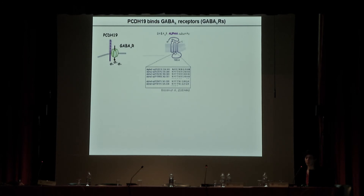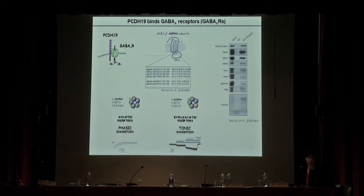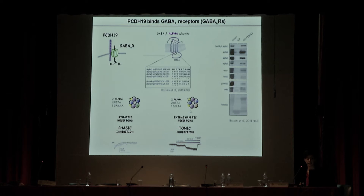In the lab, we found that protocadherin-19 binds GABA-A receptors, in particular the alpha subunits. GABA-A receptors are composed of two alpha subunits, two beta, and one gamma or delta subunit. Gamma subunits are present in synaptic receptors mediating phasic inhibition — short-lasting inhibition at single synapses — while delta subunits are typical of extrasynaptic receptors mediating tonic inhibition, a sustained inhibition involving the entire neuron. According to our data, protocadherin-19, by binding alpha subunits, is able to associate with both receptor pools.